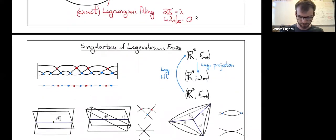If we're given a positive braid, what we want to do is encode the information of a surface by studying the singularities of its front projection.